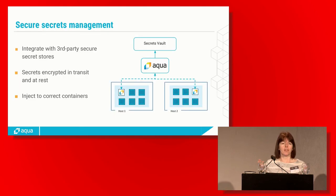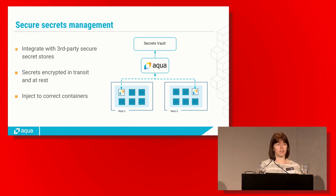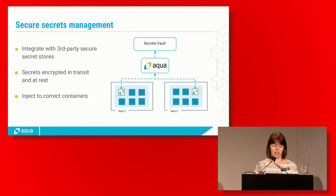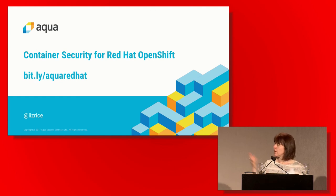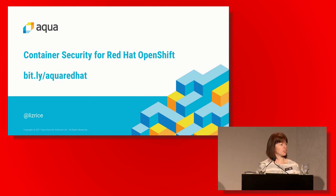Secrets management. There are plenty of really good solutions out there for storing your secrets securely. What we can do is help you get those secrets into the right container at the right time, keeping them encrypted while they're flowing around your network and keeping them off of disk. There is a lovely page on our website — here's a short link, bit.ly/AquaRedHat — that will tell you more about what Aqua does in conjunction with OpenShift and how we work together with Red Hat.